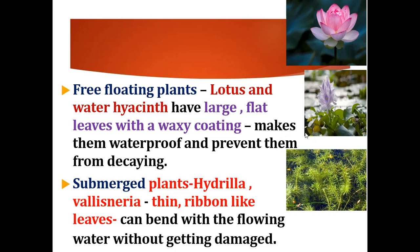Submerged plants, which you can see in the picture, are plants that stay under the water. Examples of submerged plants are hydrilla and vallisneria, which have thin ribbon-like leaves that can bend with the flowing water without getting damaged.